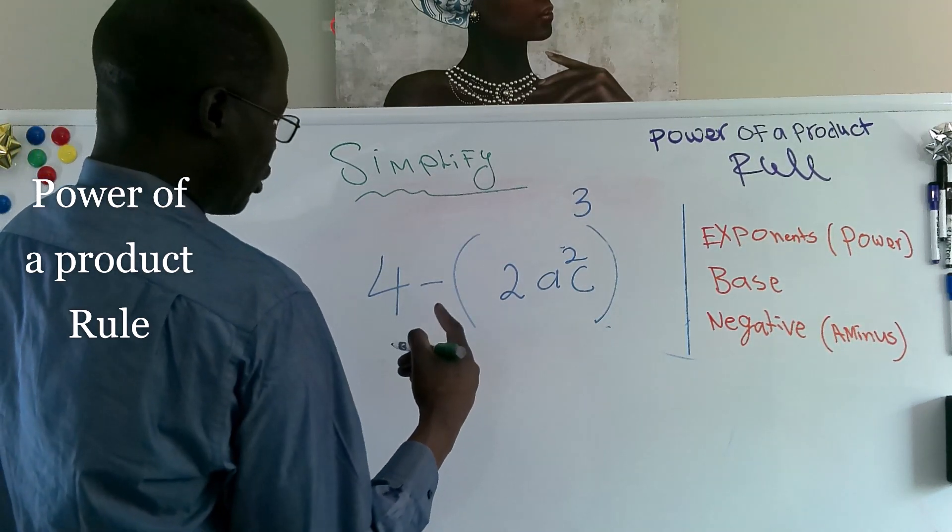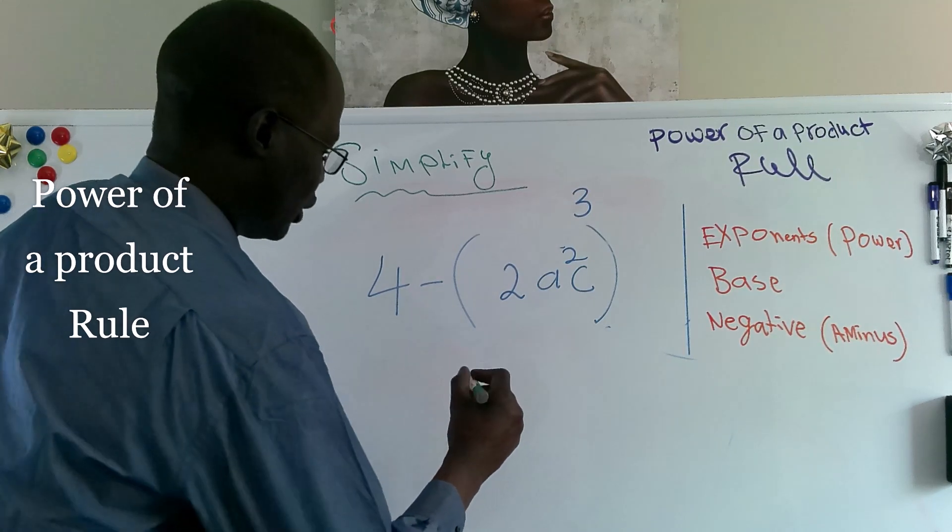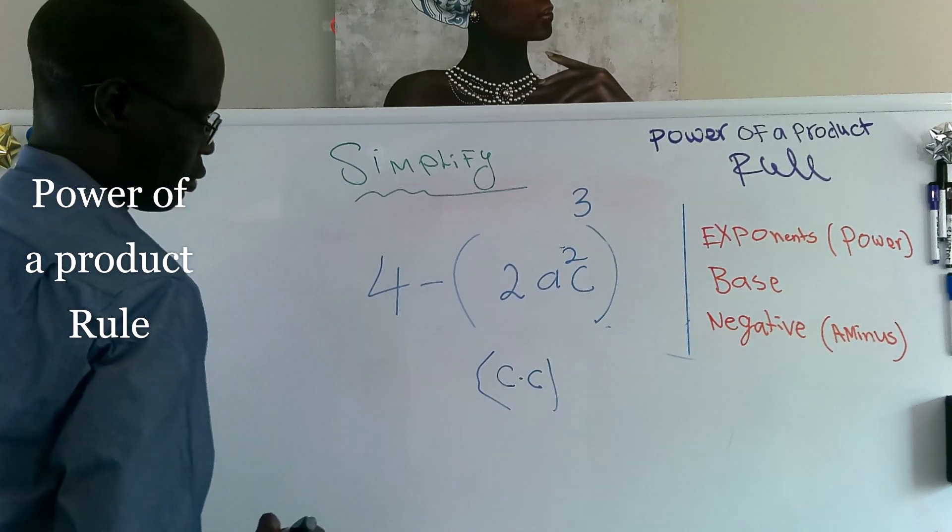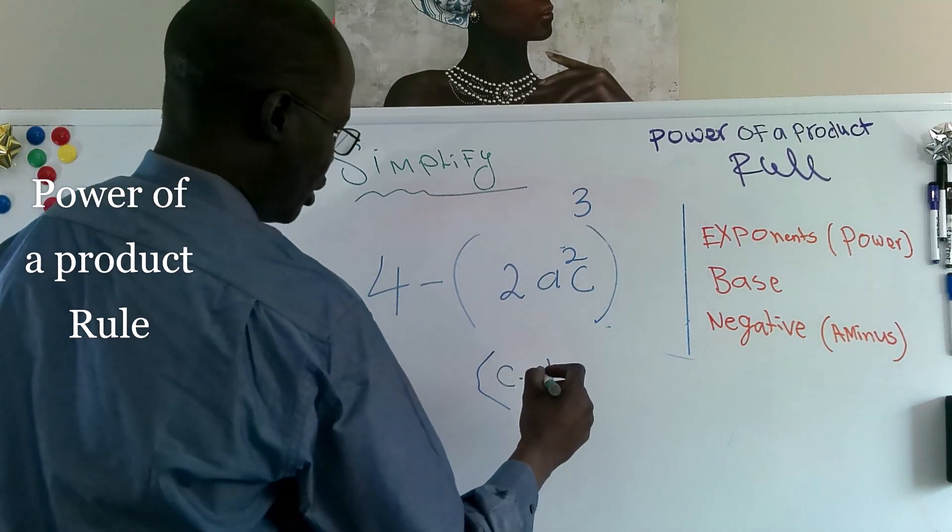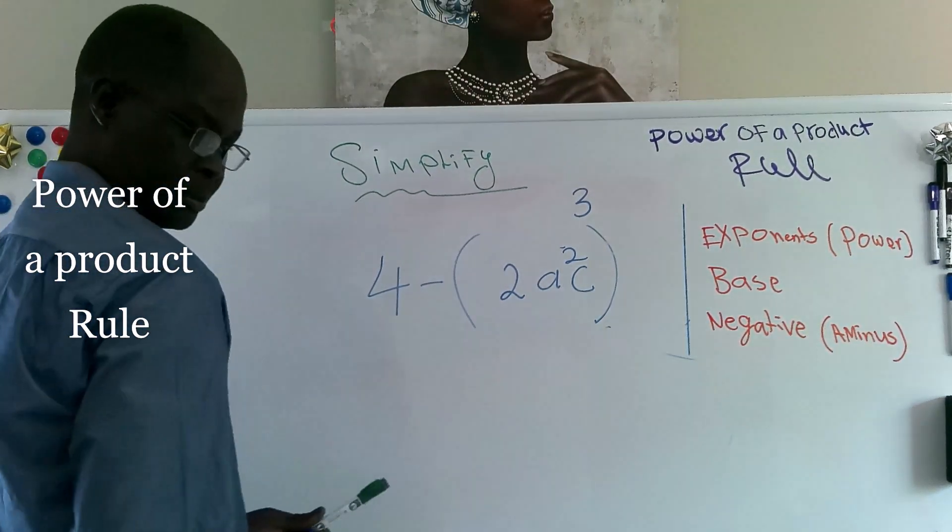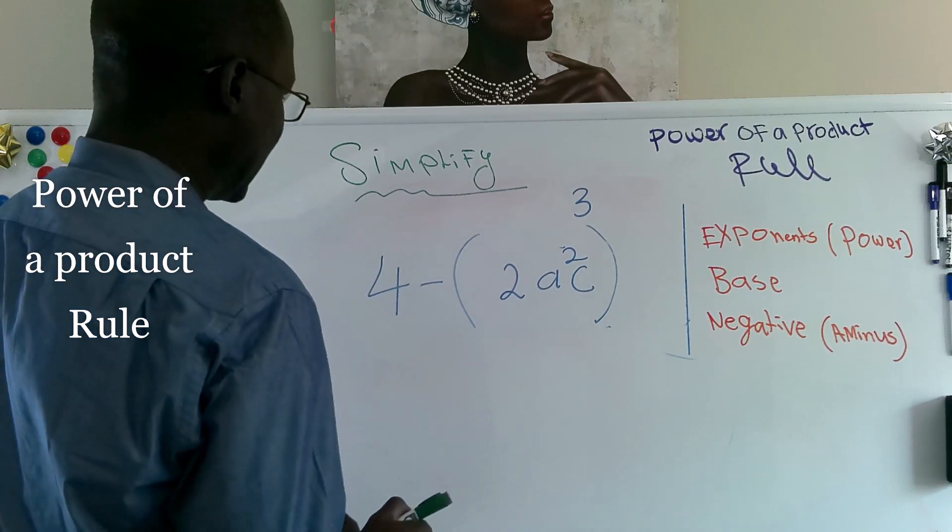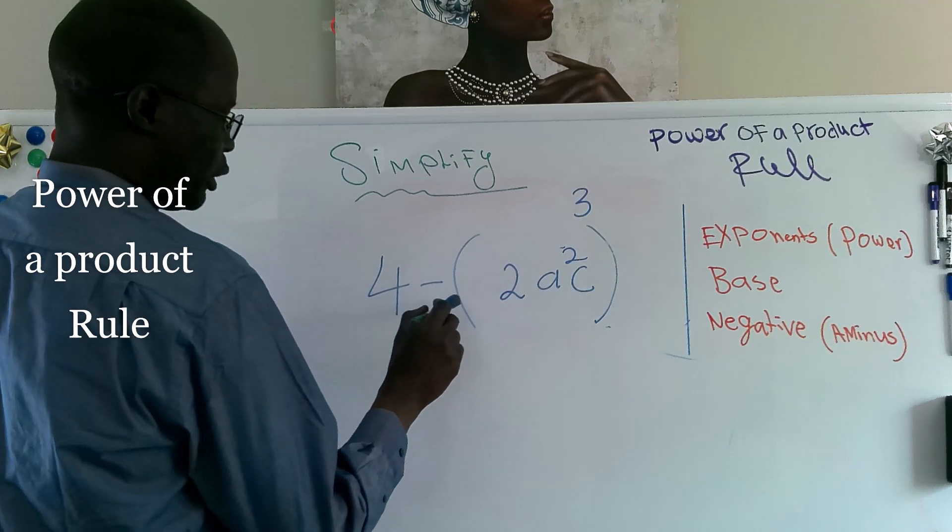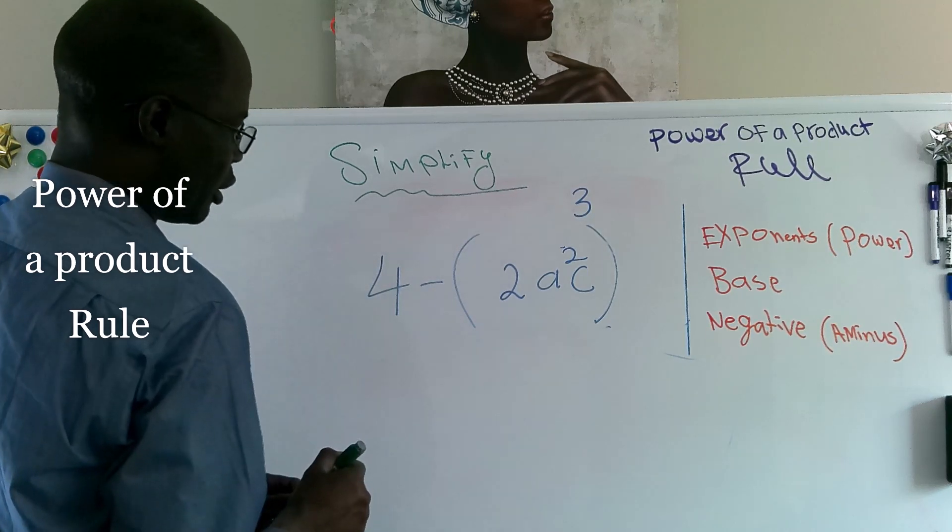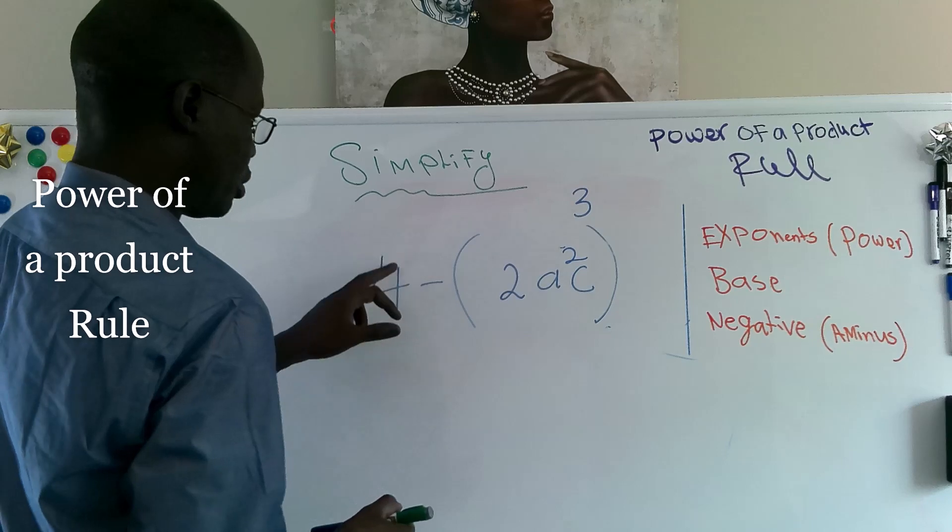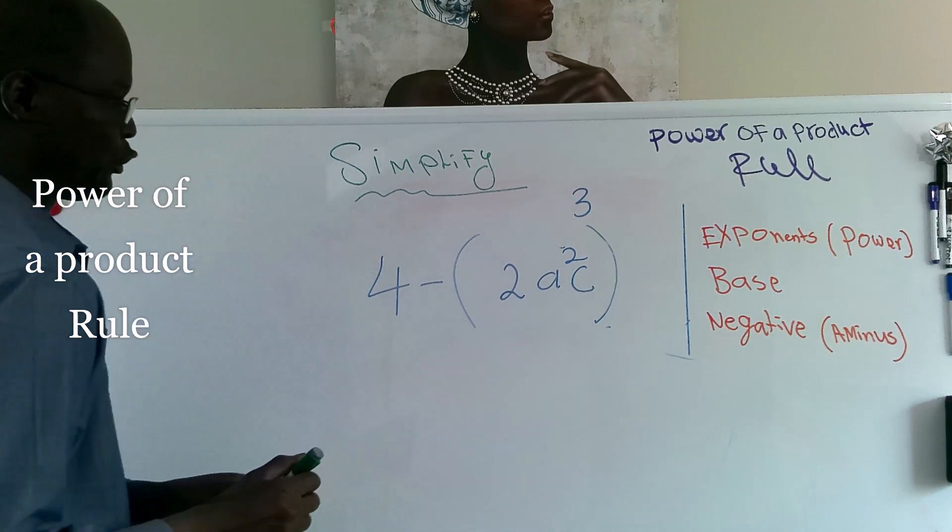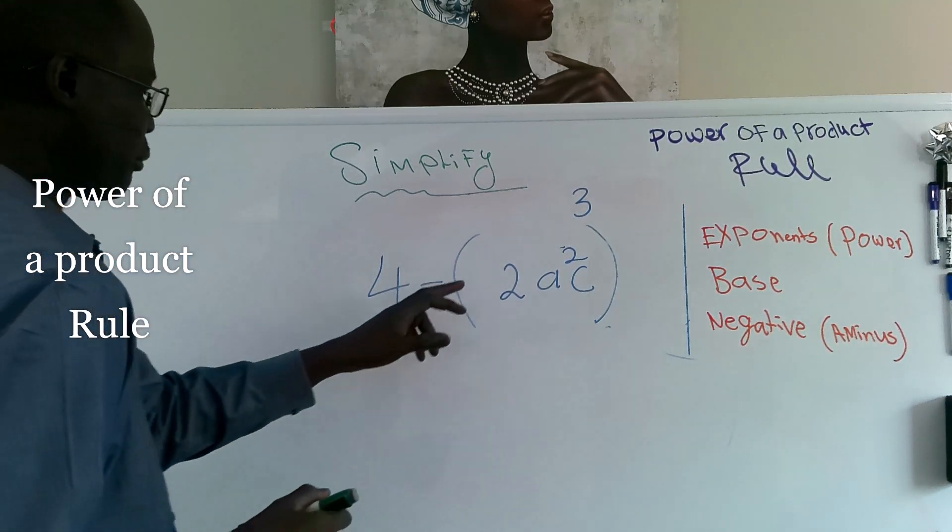To the second power or to the square c, it means that c times c. And the 2 is 2 times itself 1. In here, the only thing that's going to be multiplied to this problem is just only the minus or negative. Even if this was a positive or plus sign, it's the only thing we can multiply to 2 and a and c.